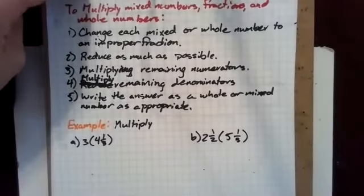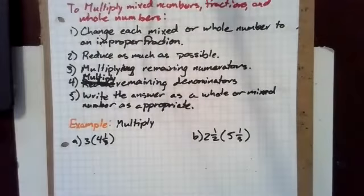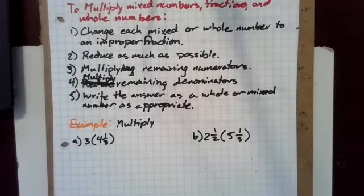To multiply mixed numbers, fractions, and whole numbers, first change each mixed or whole number to an improper fraction and then reduce as much as possible. You multiply the remaining numerators and the remaining denominators and then write the answer as a whole or mixed number as appropriate.